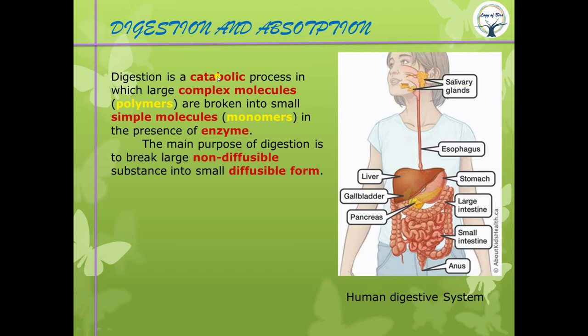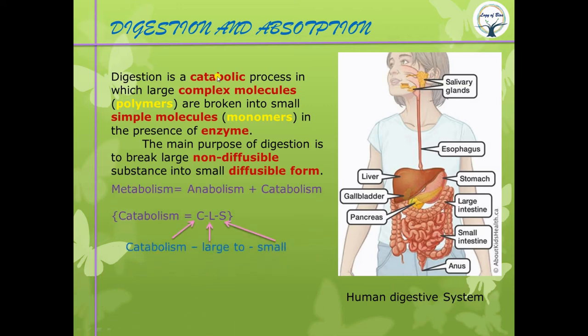Here is a shortcut: ASL — Anabolism, Small to Large. And from computer programming, the command CLS clears the screen — remember it as Catabolism, Large to Small. CLS = Catabolism Large to Small; ASL = Anabolism Small to Large. Catabolism plus anabolism together makes up metabolism.